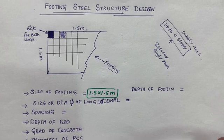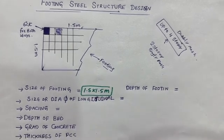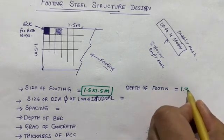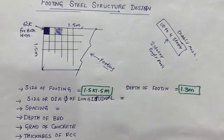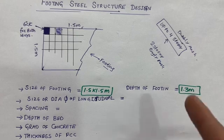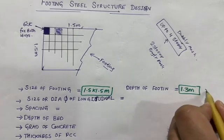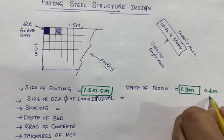What should be the depth of footing? The depth of footing should not be less than 1.3 meter. You can also include the plinth level, which you can keep up to 0.6 meter.